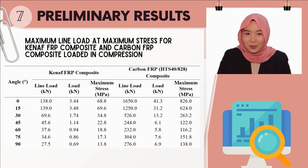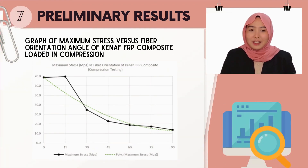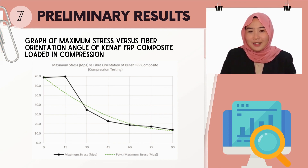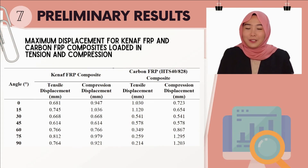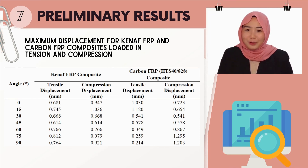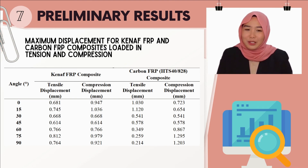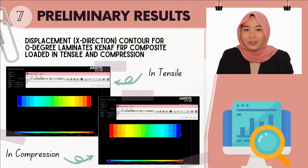The table shows the maximum line load and maximum stress for kernel and carbon fiber reinforced polymer composite loaded in compression. This graph demonstrates the relationship between the maximum stress and fiber orientation angle of kernel fiber reinforced polymer composite loaded in compression. The polynomial line shows that the highest maximum stress when loaded in compression is obtained at 0 degree, while the lowest is obtained at 90 degree. The table also shows the maximum displacement for kernel and carbon fiber reinforced polymer composite loaded in tension and compression. From the results, the maximum compression displacement of the kernel fiber reinforced polymer composite is greater compared to its maximum tensile displacement. This slide shows the example of displacement contour in the x-direction for 0 degree laminates of kernel fiber reinforced polymer composites loaded in tensile and compression.